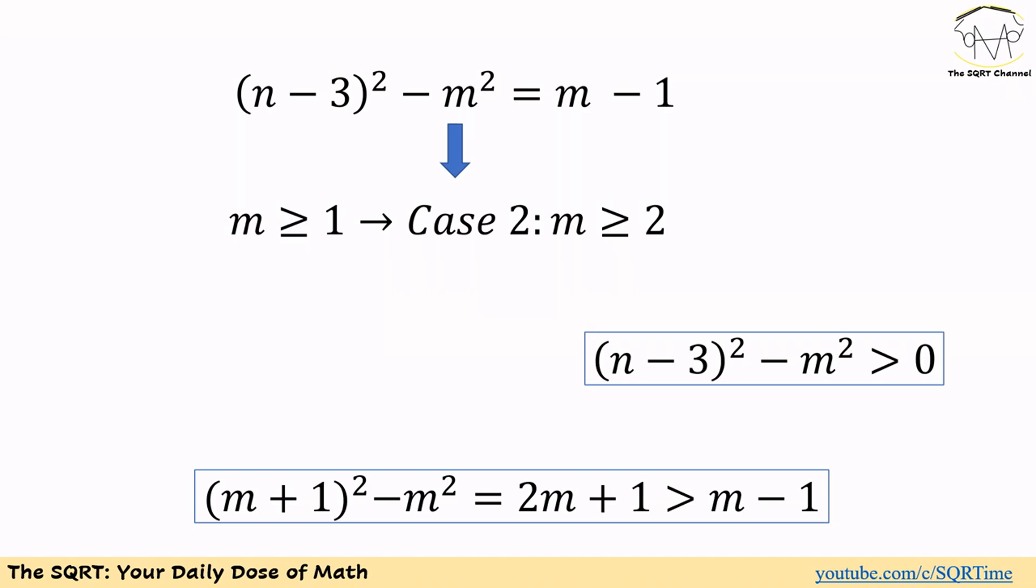In other words, the only possible solution that we can have for the equation is going to be m is equal to 1 and n is equal to 2 or 4. And these are the only answers that we can have.